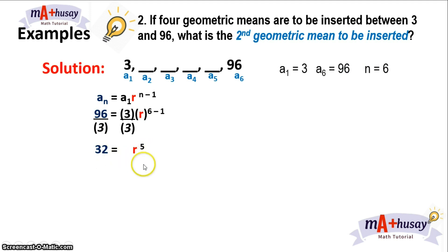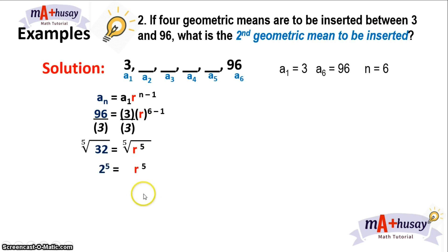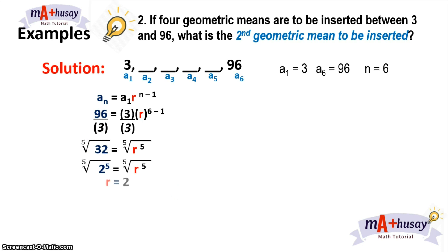To solve for r, we get the fifth root of both sides of the equation. We know that 32 can be expressed as 2 to the fifth power. So when you get the fifth root of both sides, you get r equals 2. Note that the index of the radical is odd — that's 5 — so there exists exactly one real root of 32.